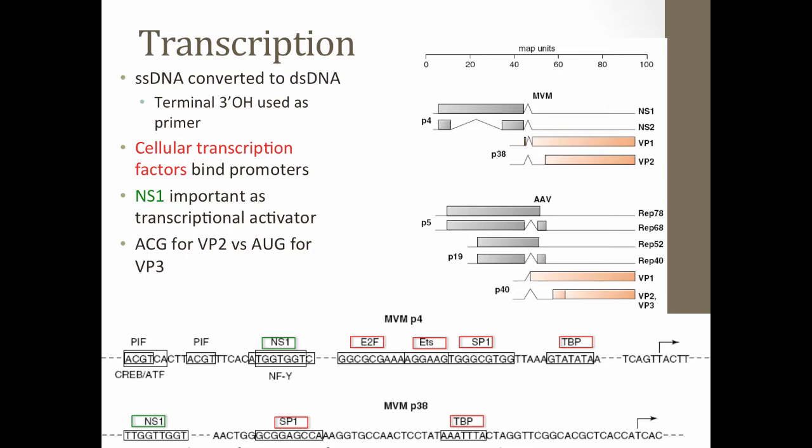Once converted to double-stranded, you can have cellular transcription factors binding to your viral promoters. In the red boxes: E2F, SP1, and the TATA binding protein — all ubiquitous, very common transcriptional regulators. In green you have NS1, which is the protein provided by the virus that mediates replication. There's also the alternative start codon for VP2 versus VP3. So lots of splicing and an example of alternative start codon usage. Cellular and viral transcription factors give rise to the necessary proteins to make new virus particles.